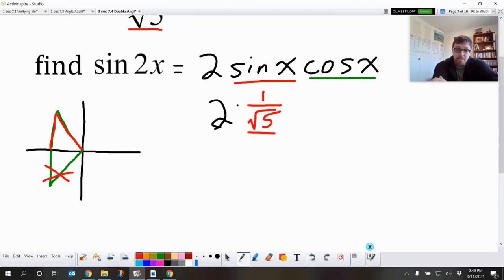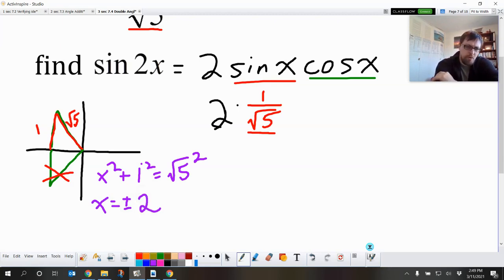So sine is opposite over hypotenuse. So my opposite side is going to be 1. And then we get the square root of 5. So then I've got to figure out my x value. So I'd be x squared plus 1 squared equals the square root of 5 squared. So x equals plus or minus square root of 4. x is going to be plus or minus 2. But I want negative 2 because I'm going to the left.